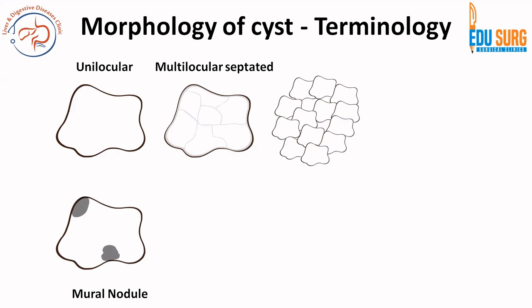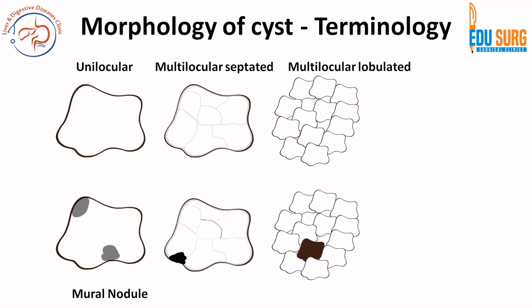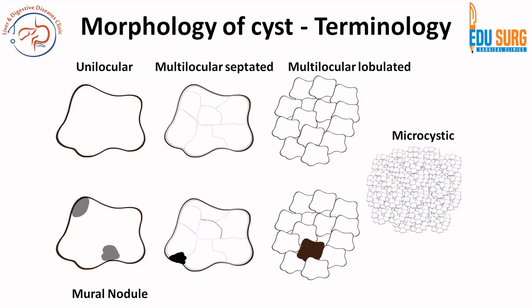A cyst with a multilocular appearance but a lobulated outline is a multilocular lobulated appearance. There is a difference between multilocular septated and multilocular lobulated. Both of them can have a mural nodule — multilocular septated with mural nodule or multilocular lobulated with mural nodule. The term macrocystic is not routinely used in scientific literature; the standard terms are unilocular, multilocular septated, macrocystic (multilocular lobulated), and microcystic.